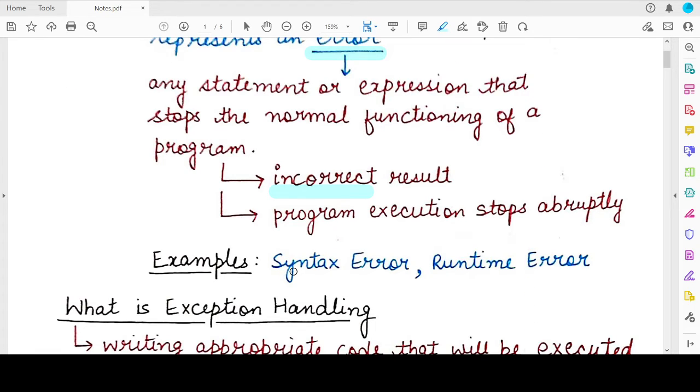So some examples of errors or exceptions in Python are syntax errors, runtime errors. So syntax errors are the errors that occur when some rule of the Python programming language gets violated. So you did not follow the correct naming convention or you did not indent the program as required.